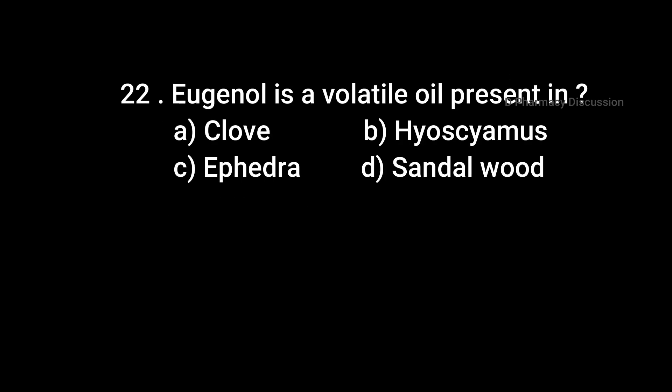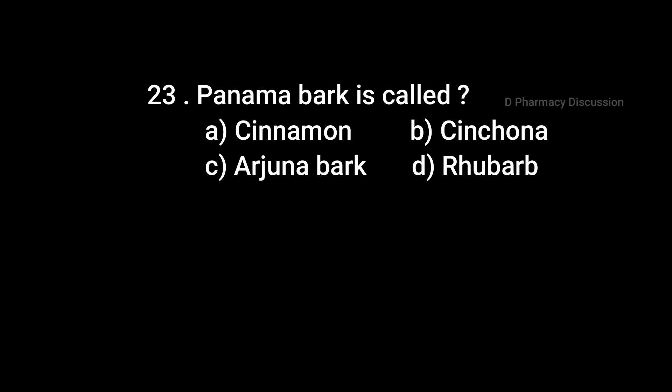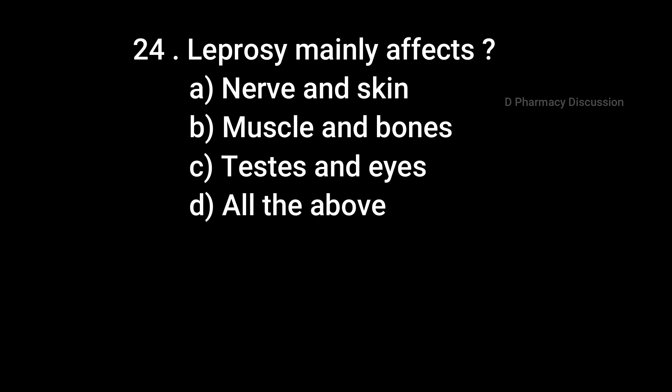Question 22: Eugenol is a volatile oil present in — Option A: Clove, B: Hyoscyamus, C: Ephedra, D: Sandalwood. Correct answer is Option A: Clove. Question 23: Panama Bark is called — Option A: Cinnamon, B: Cinchona, C: Arjuna Bark, D: Rhubarb. Correct answer is Option B: Cinchona. Question 24: Leprosy mainly affects — Option A: Nerve and skin, B: Muscle and bones, C: Testes and eyes, D: All the above. Correct answer is Option D: All the above.